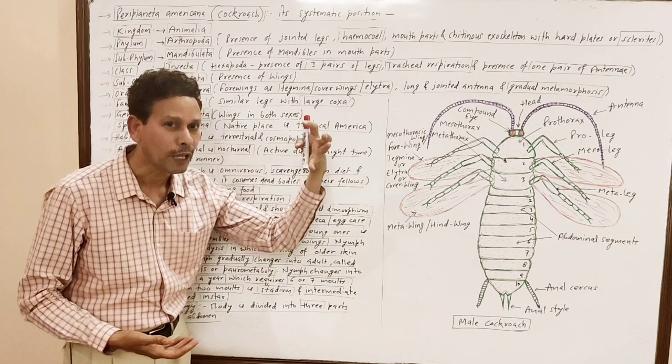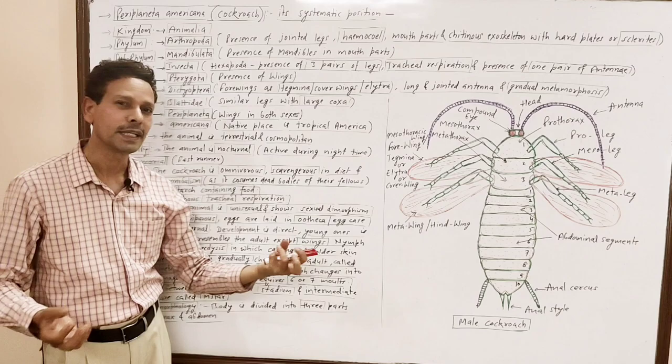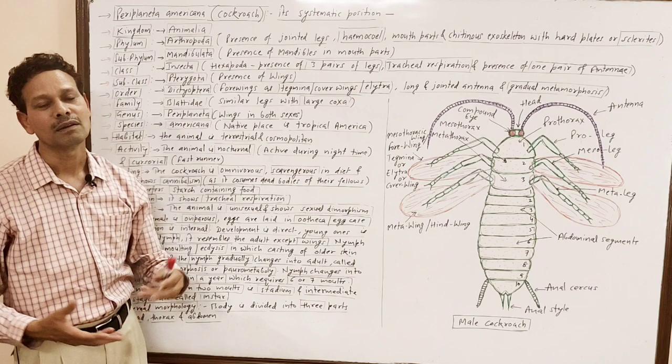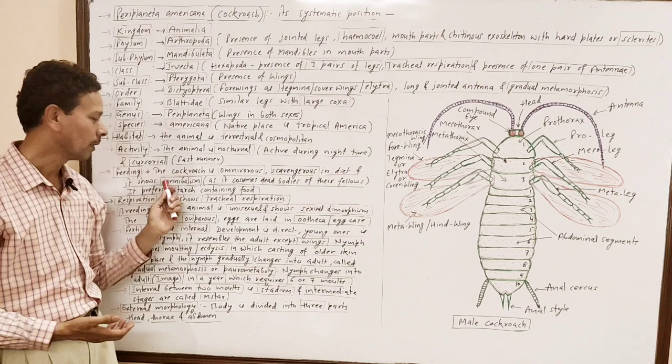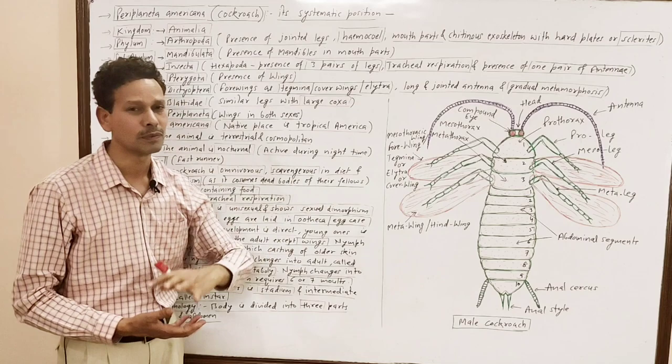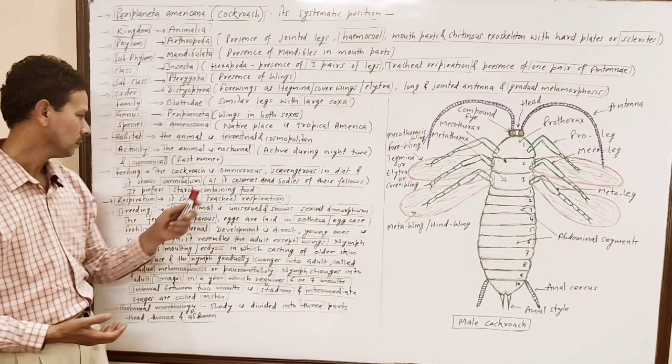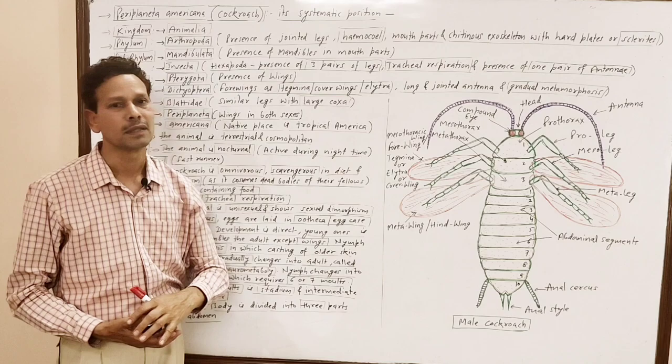Feeding: the cockroach is omnivorous — it consumes all types of food. It is scavengerous in its mode of feeding. Another very important point: the animal shows cannibalism — it consumes dead bodies of its own species. It prefers starchy food in its diet.